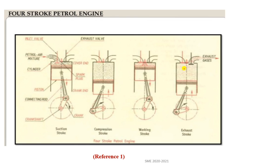This is the layout of the four-stroke petrol engine. The figure shows the cylinder block, inlet and outlet valves, connecting rod, crank, crank pin, crankshaft, and piston. Since the spark plug is shown, this is a petrol engine. There are four strokes: the first is the suction stroke, second is the compression stroke, third is the working or expansion stroke, and fourth is the exhaust stroke.